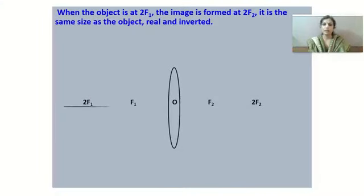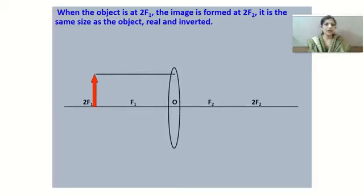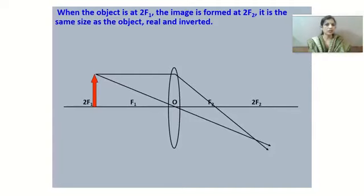When the object is at 2F₁: the ray of light parallel to the principal axis after refraction passes through F₂; the second ray through the optical center goes undeviated. The image is formed at 2F₂. Both the object and the image are of the same size; the image is real and inverted.